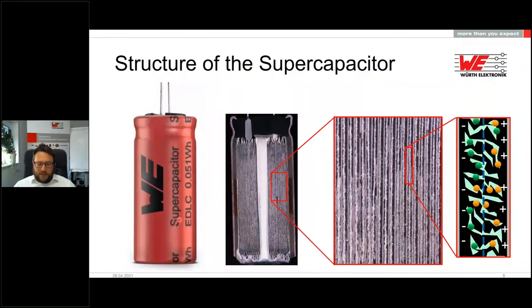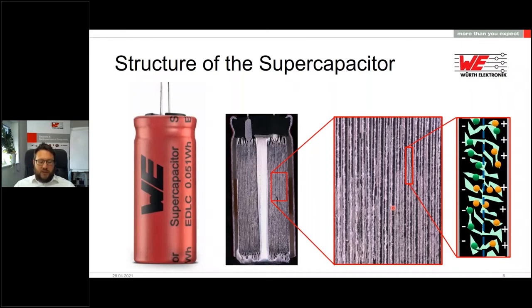This is how a supercapacitor looks in reality — a cross-section. When you compare it to traditional or electrolytic capacitors, they look quite similar at first glance. One important property is the large effective electrode area obtained by porous activated carbon. This large area provides space for ions, meaning more charge can be stored at the interfaces — and thus more energy. This layer of charge is balanced by a so-called mirror charge, forming the double layer, also called the Helmholtz layer.